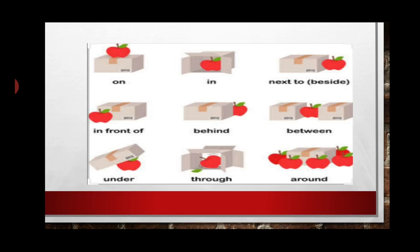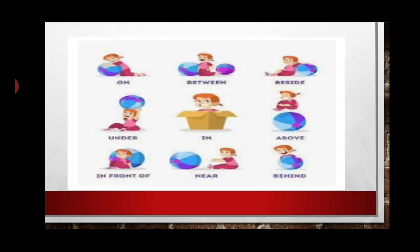Now here you can see a small girl playing with a ball and a box. In the first picture, the girl is on the ball. In the second one, the girl is between two balls. Third, the girl is sitting beside the ball. Then the girl is under the ball — the ball is up and the girl is sitting below it. Then the girl is in the box, the girl is above the ball, and the girl is in front of the ball.